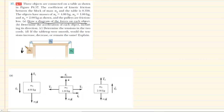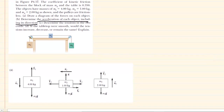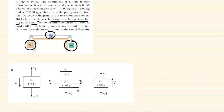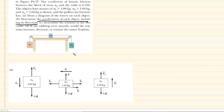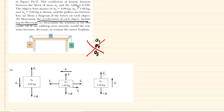This completes the three free body diagrams for part A. Moving on to part B, we need to determine the acceleration of each object, including its direction, by applying Newton's second law. Because all three blocks are connected in a single system, they accelerate at the same rate. So we will use a single symbol A for the acceleration rather than A1, A2, and A3.